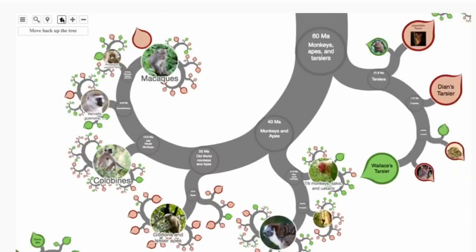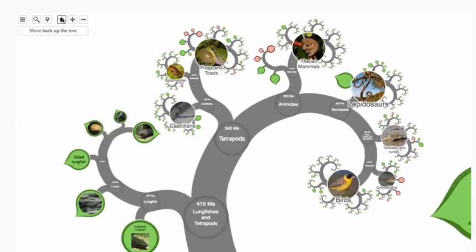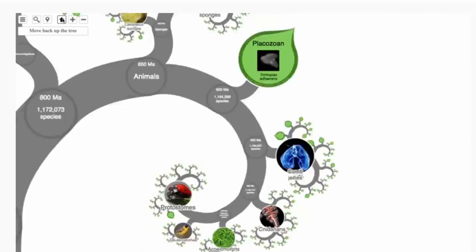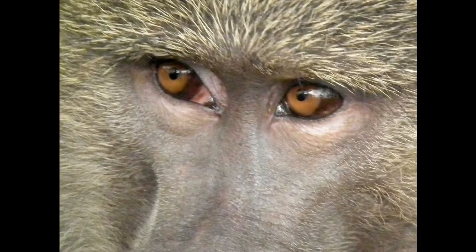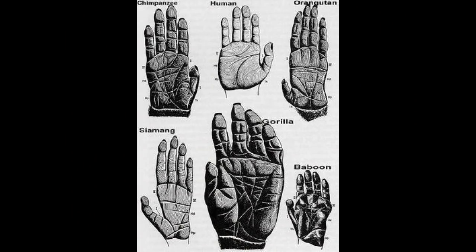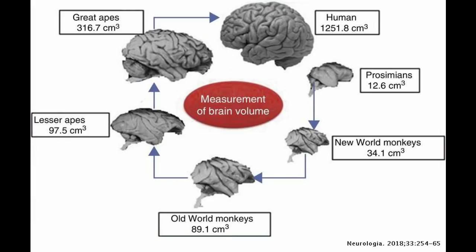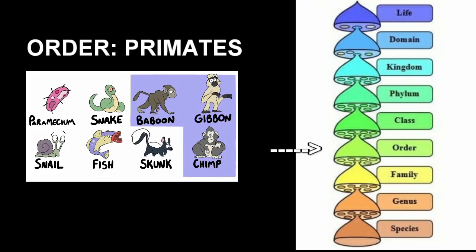Within mammalia, we can further separate out our animals. While skunks, baboons, gibbons, and chimps all share the suites of characteristics that make them eukaryotes, animals, chordates, and mammals, they now diverge here as well. Baboons, gibbons, and chimps each have binocular color vision, grasping dexterous hands, large brains for their body size, and highly flexible shoulder girdles, among others. This makes them all primates, or members of the order primates.